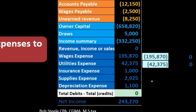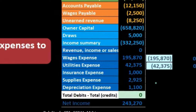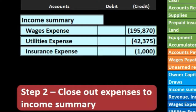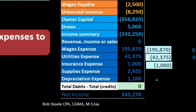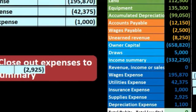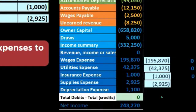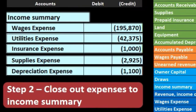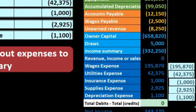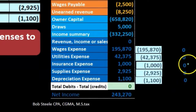Then we have a debit of 1,000 in insurance expense. We're going to do the opposite and credit it, bringing it down to zero. Then we have a debit of 2,925 in supplies expense — we're going to credit it, bringing the balance down to zero. And finally, we have depreciation expense with a debit of 1,100. We're going to do the opposite, bringing that balance down to zero. So that will bring all these expenses to zero.